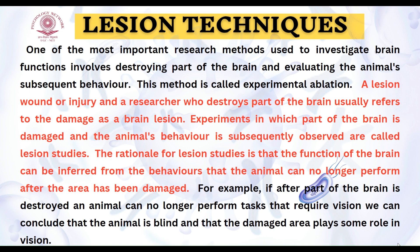For example, if the occipital lobe — the back part of the brain — is damaged by a surgeon and after that the animal can no longer see, that means the occipital lobe is related to the visual area. Similarly, if the temporal lobe is lesioned and the animal then has short-term memory problems and cannot be conditioned, that means short-term memory can be attributed to the temporal lobe. These were among the first techniques used in ancient times to study the brain.